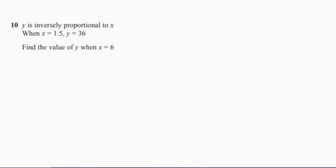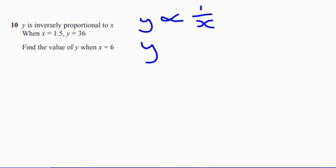Question 10. So y is inversely proportional to x. When we write this down, we write it like this — that means y is inversely proportional to x. We write it as an equation: it means some number, we just happen to call that k, over x. So y equals some number over x.